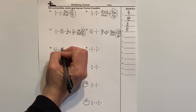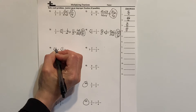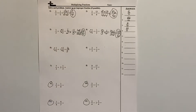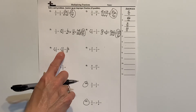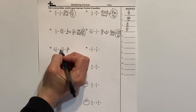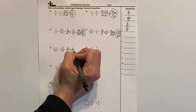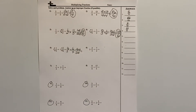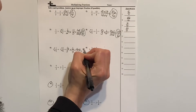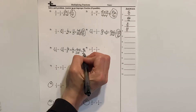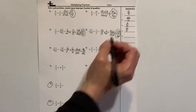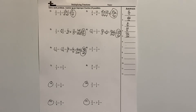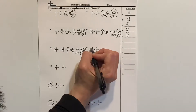Now I've got two mixed numbers, so I have to do multiply-then-add for both. 5 times 3 is 15, plus 1 is 16, so that's 16 fifths — remember, the denominator doesn't change. Then 4 times 1 is 4, plus 2 is 6, so 6 fourths. That's the same as 16 times 6 over 5 times 4: 16 times 6 is 96, and 5 times 4 is 20. So number 5 is 96 twentieths.